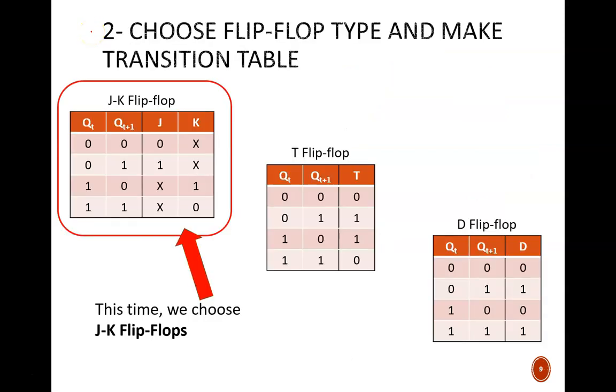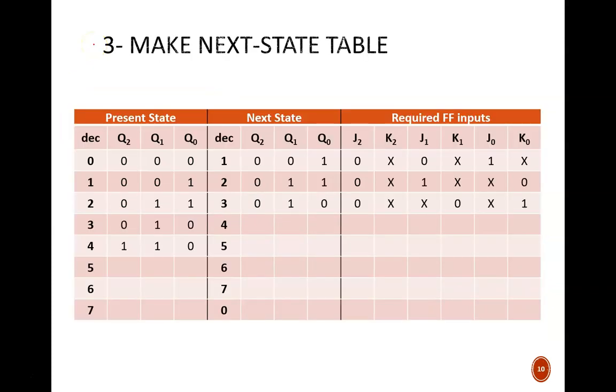Step two of the design is to select the flip-flop type and draw the transition table. Here, we are arbitrarily choosing JK flip-flops. Step three is to make the next state table. The present state and next state sections are taken directly from the state diagram. For instance, 011, gray code for 2, will become 010, gray code for 3. Then, the J and K inputs for each flip-flop are filled in to enact that change.